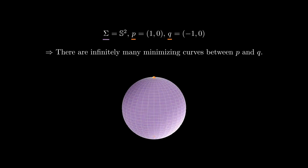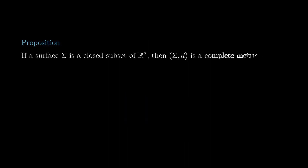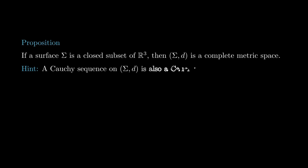To see that minimizing curves are not always unique, we just need to take a look at the round sphere, where any meridian is a minimizing curve between the north pole and the south pole. But we also have good news: if a surface sigma is a closed subset of R3, then (sigma, d) is a complete metric space, where d is the induced metric. This is an easy consequence of the fact that a Cauchy sequence in the metric space (sigma, d) is also a Cauchy sequence in R3, and this is left as an exercise.